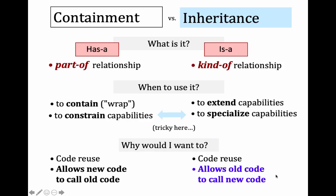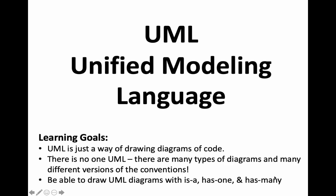Containment wraps or contains — it allows code reuse and allows new code to call old code. Inheritance is an 'is-a' relationship; we're able to extend and specialize capabilities, and as we just saw, it allows old code to call new code.